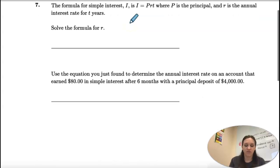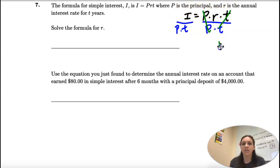We want to solve this formula for R. So I have I, and then PRT. That means P times R times T, but we just write them all right next to each other. The opposite of times is divide, and I'm going to divide by P and T because that leaves R by itself.